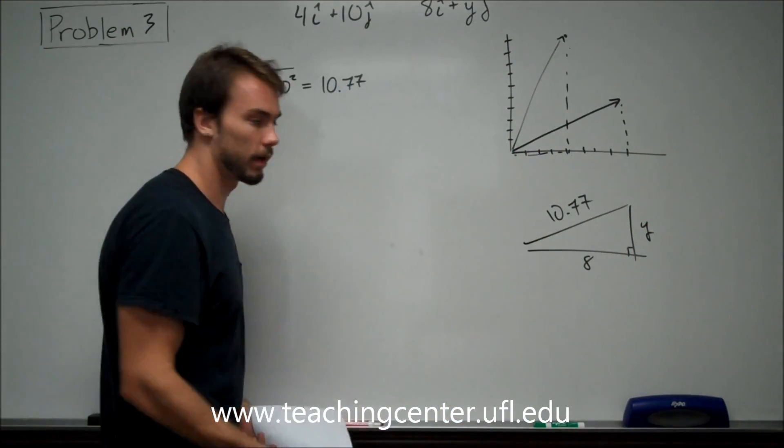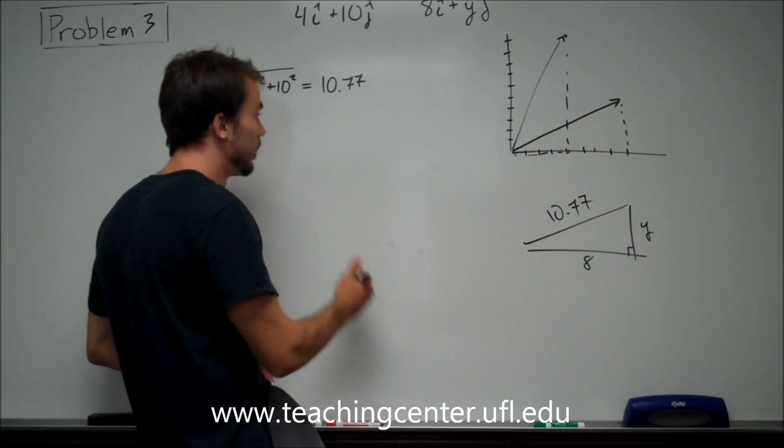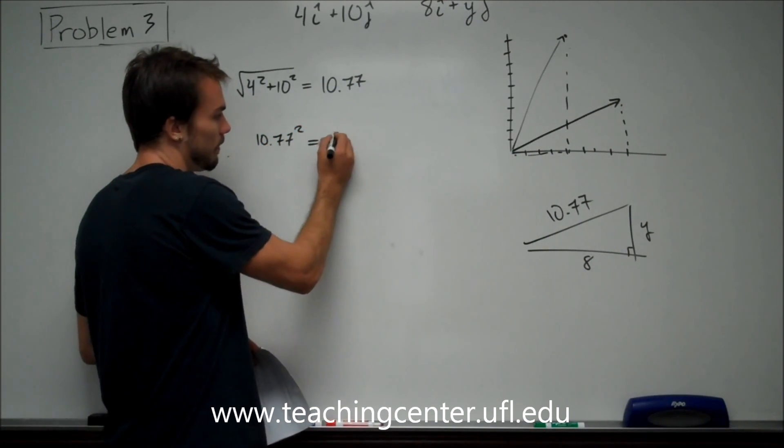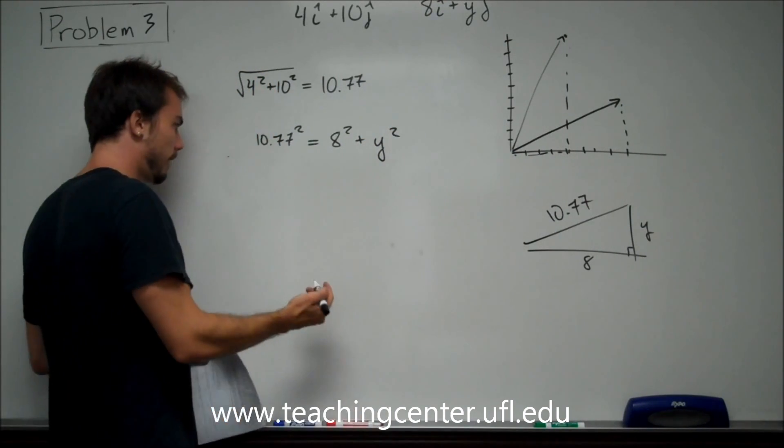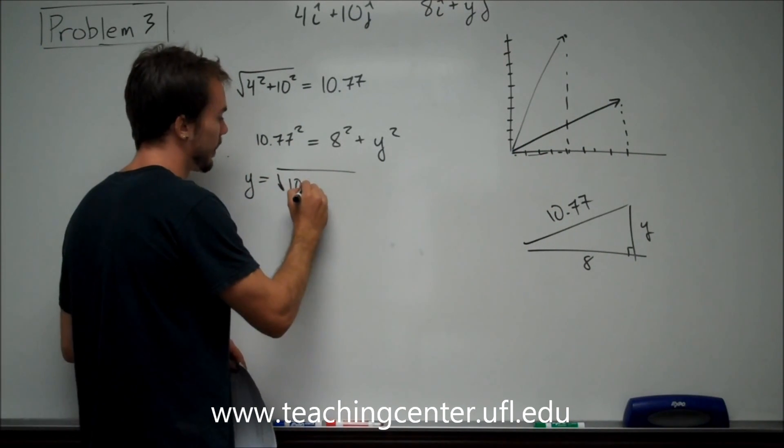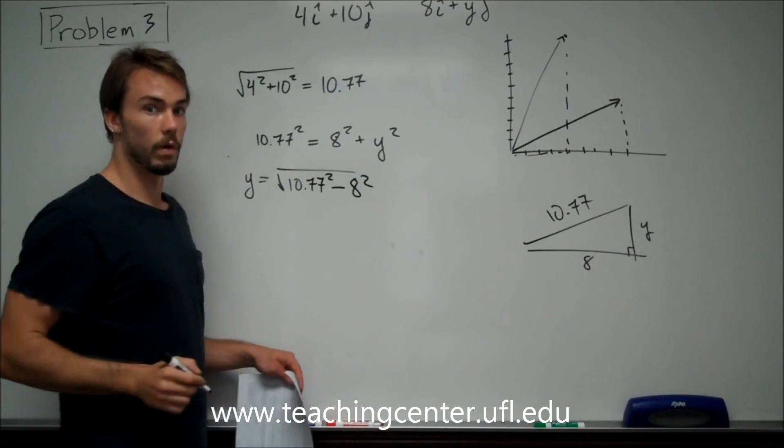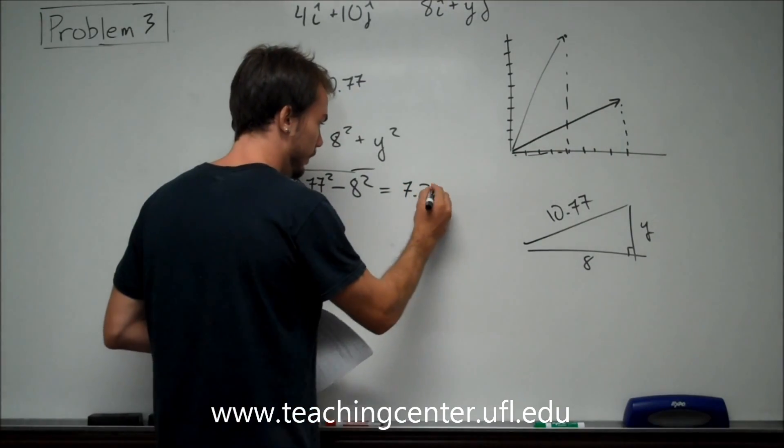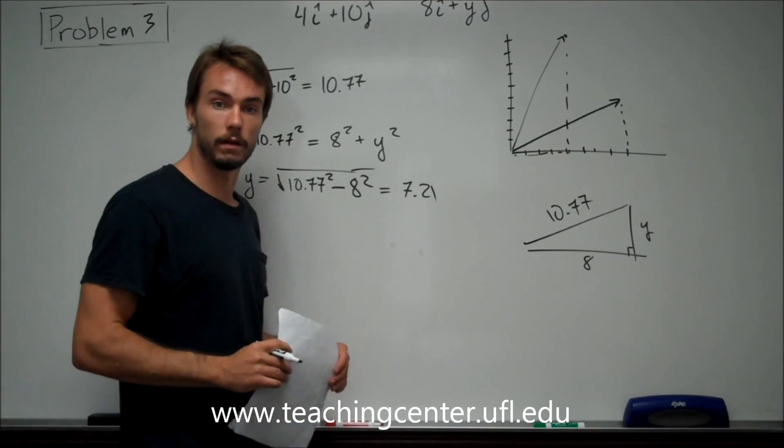So still a right triangle. Still just two X and Y components that are perpendicular to one another. No reason to not use Pythagorean theorem again. So we can say that 10.77 squared is equal to 8 squared plus Y squared. So in this case, what we're actually going to be doing is saying Y is going to be equal to the square root of 10.77 squared minus 8 squared. Because we're going to subtract this over and then take the square root. So that is just going to end up giving you 7.21. And that's going to be your answer, 7.2 is the correct answer on this.